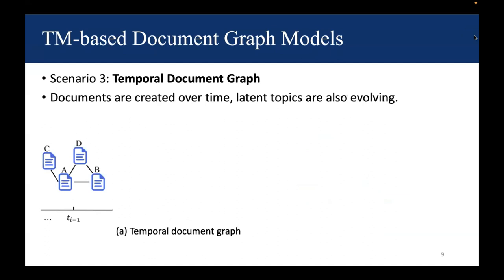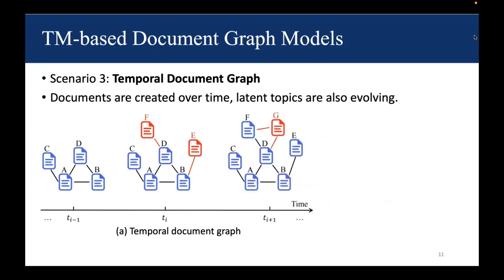The third scenario is a temporal document graph. Documents are usually created over time. For example, at the very beginning, we have four documents. Maybe later, two more documents, E and F, are created and contain links to existing documents. And further, one more document G is created.